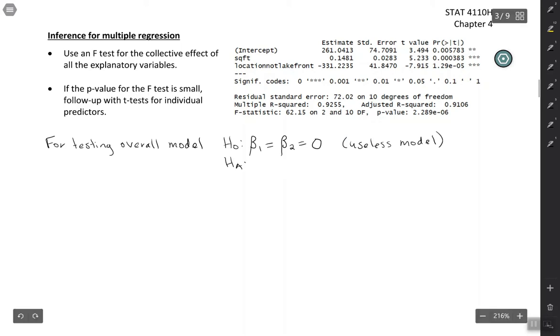And then your alternative, maybe not surprising based on what you've seen before, is that at least one of these slopes, at least one of the betas is not equal to zero. So basically that means you have at least one useful predictor. This isn't telling us right away which one, just that we have at least one useful predictor in this model.